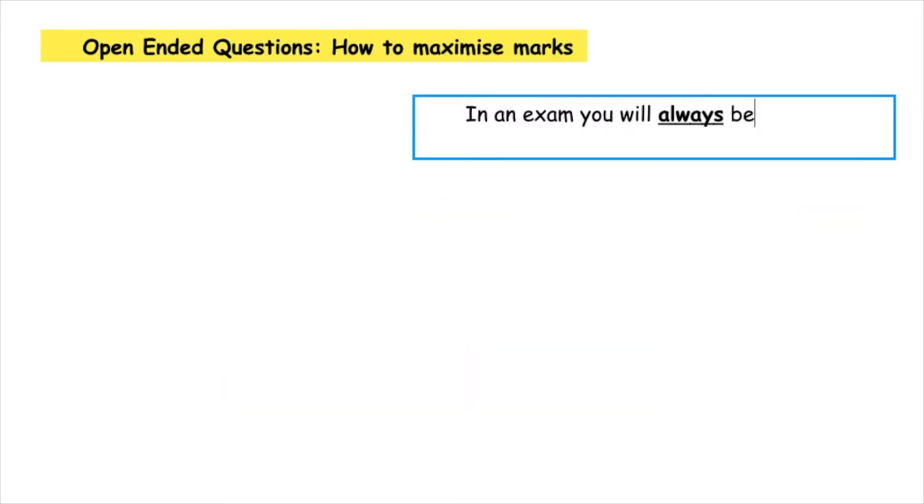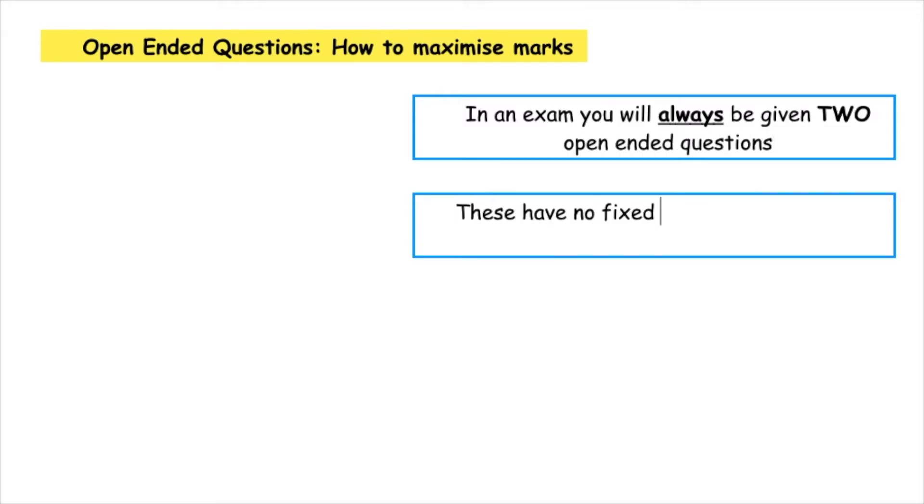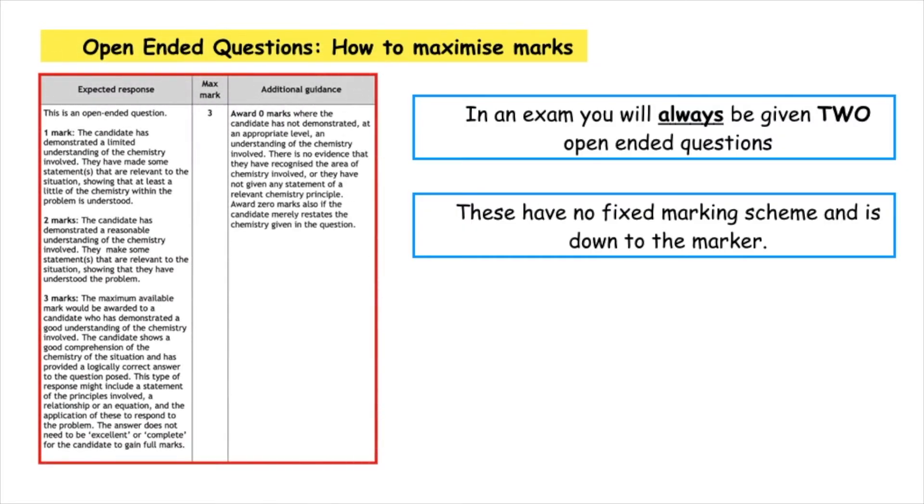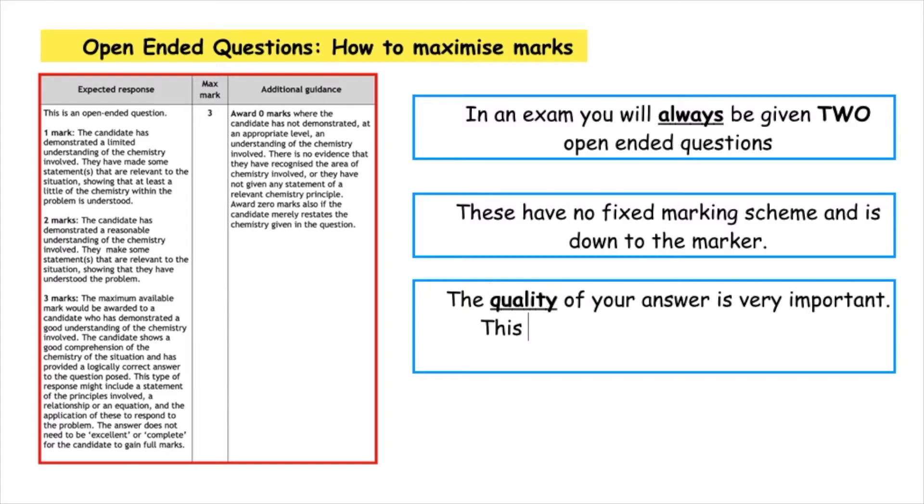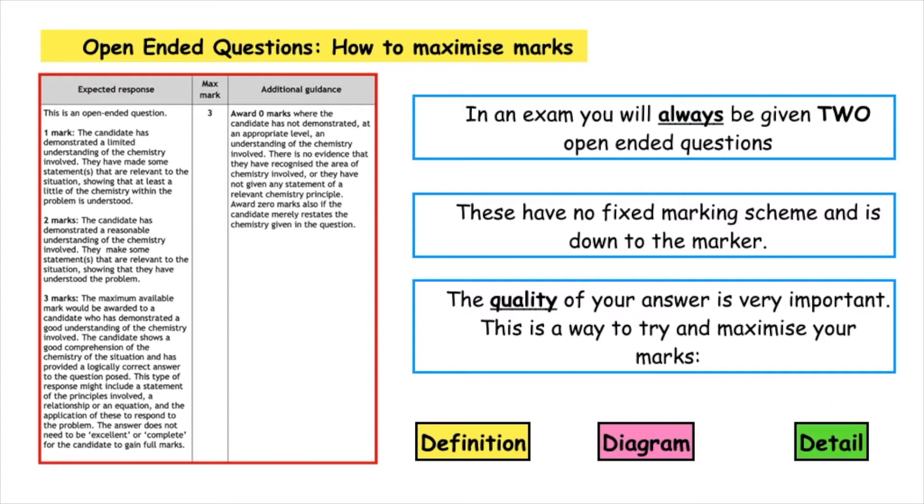In an exam you will always be given two open-ended questions. These have no fixed marking scheme and is down to the marker to provide you with either one, two, three, or zero marks. In your exam I've popped the expected response and additional guidance that markers will be given on the left hand side. The quality of your answer is very important. Now this is a way that you can try to maximize your marks: one by giving a definition, two a diagram, and three giving us a little bit of detail related to the question.